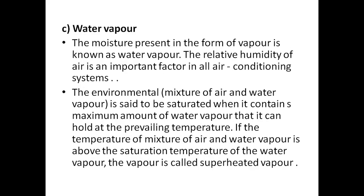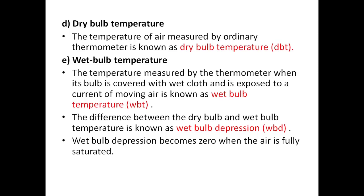Now some technical terms with respect to psychrometry. Dry bulb temperature (DBT) is the temperature measured by an ordinary thermometer. Wet bulb temperature (WBT) is measured when the bulb of the thermometer is covered with wet cloth and exposed to moving air. The difference between these two is known as wet bulb depression.